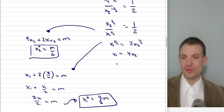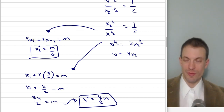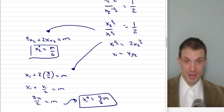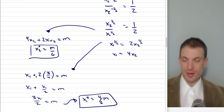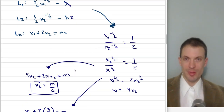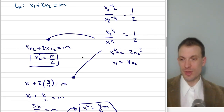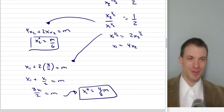Substituting x₁ = 4x₂ into the constraint x₁ + 2x₂ = m gives us x₂ = m/6. Then substituting back — replacing x₂ with x₁/4 — we have x₁ + 2(x₁/4) = m, which is x₁ + x₁/2 = m. This comes directly from plugging the tangency condition back into the budget constraint.